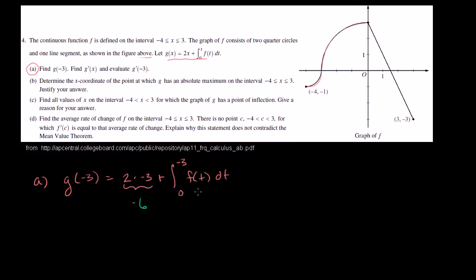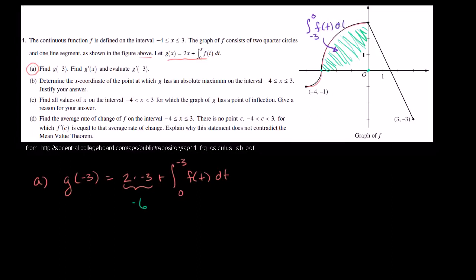And then this part is the definite integral from 0 to negative 3 of f(t) dt. This is essentially the area under f from 0 to negative 3. We have to be careful here because the area under this quarter circle would be the integral from negative 3 to 0 of f(t) dt — but the bounds are swapped, with 0 as the lower bound and negative 3 as the upper. So we can rewrite this: it's equal to negative 6 minus — because if you swap the bounds of integration, you swap the sign on the integral.